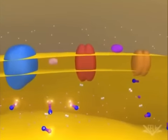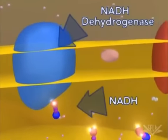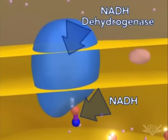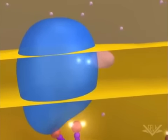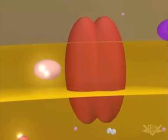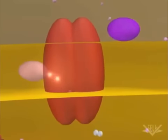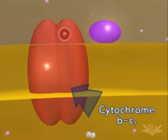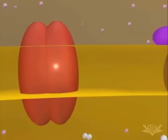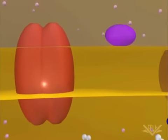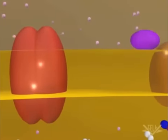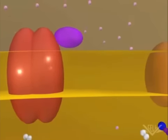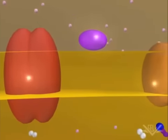To start off, NADH and FADH₂ come in to the first enzyme, NADH dehydrogenase. It takes the electrons to make NAD⁺, and pumps hydrogen ions. As the electrons move to the next cytochrome, they help pump hydrogen ions again into the inner membrane space. Basically, for every electron being moved through, one hydrogen ion is pumped. As this is occurring, you're creating a concentration gradient of hydrogen ions.